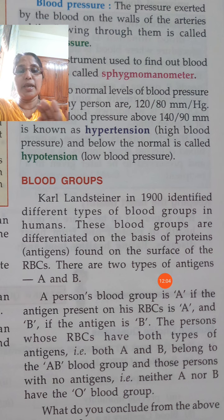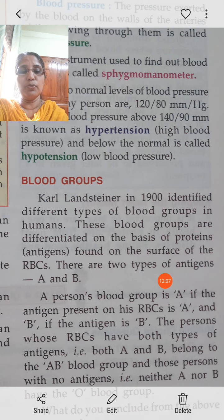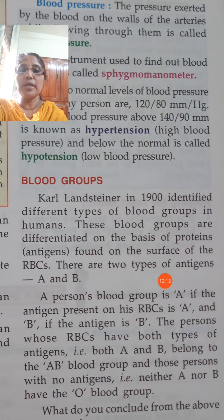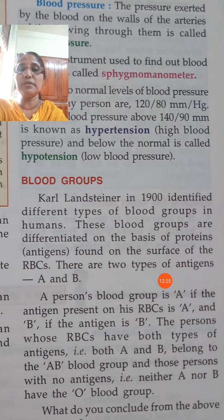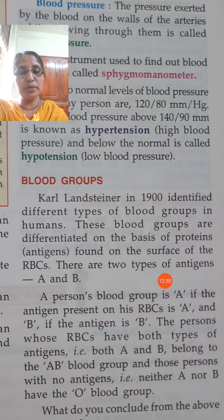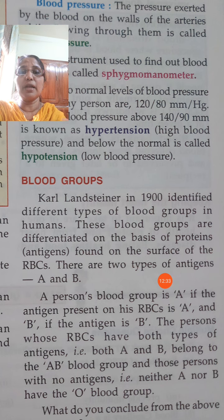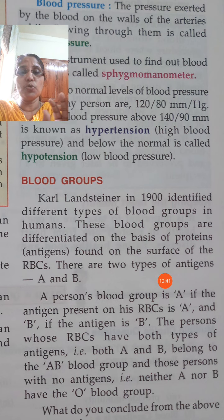The blood is grouped into A, B, AB, and O. If A antigen is present on the red blood cells, that person belongs to A group. If B kind of antigen is present, that person is grouped as B group. If both A and B kinds of protein are present on the red blood cell, that person is called AB group.